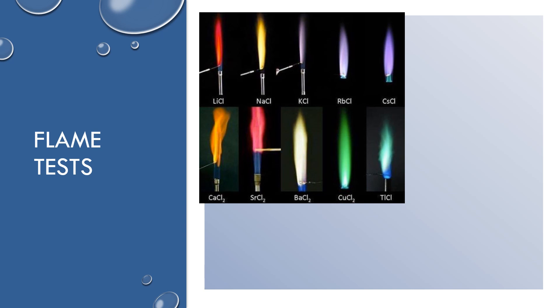Another common lab is a flame test: you take a salt sample on a metal loop or a Q-tip, place it in a Bunsen burner flame, and it glows different colors depending on the element. Chlorine salts are typically used because chlorine itself doesn't emit a color in the visible range, but the metal does. This can be used in analytical chemistry to identify unknown substances by observing the emitted color.